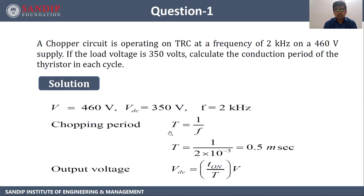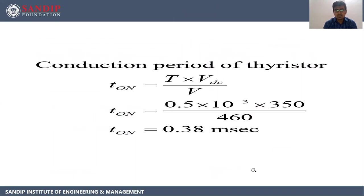So what is chopping period T? That is 1 upon F. If we substitute the value of F as 2 kHz, that is 2 into 10 raised to power 3, we are going to get T as 0.5 milliseconds. And VDC is equal to T_on upon T into V. Substituting the values, we get T_on equal to 0.38 milliseconds.